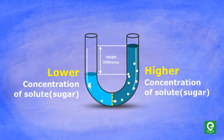The height difference between the two sides can be converted into pressure to find the osmotic pressure exerted on the solution by the pure solvent.